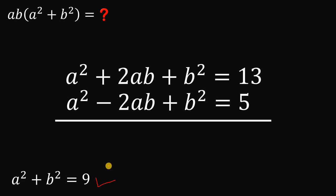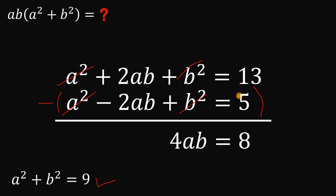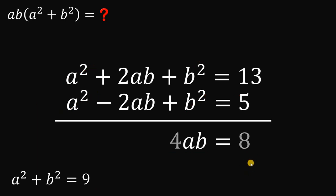Instead of adding, let's subtract the two squared equations. The a squared and b squared terms cancel out, and 2ab minus negative 2ab gives us 4ab. On the right side, 13 minus 5 equals 8. Dividing both sides by 4, we get ab equals 2.